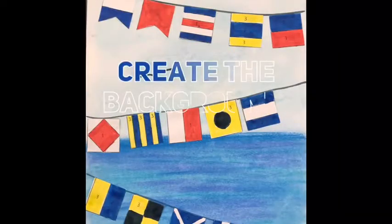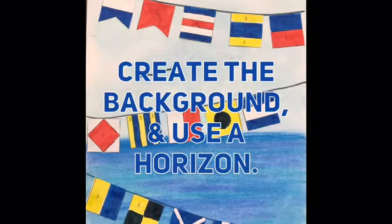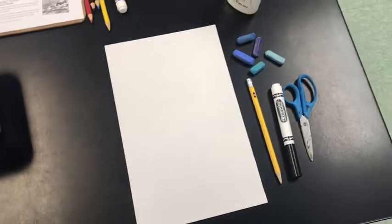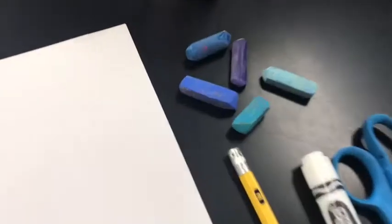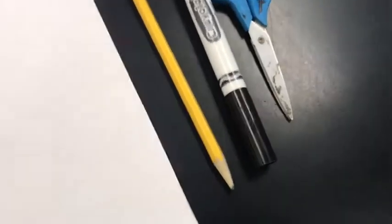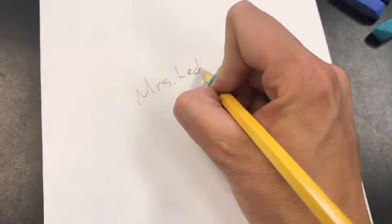Next we're going to get ready to create the background. We are using a horizon line which is where the sky and the water meet. We are using three or four or even five blue pastels of different shades of blue to make this view that we're gonna attach our flags to.